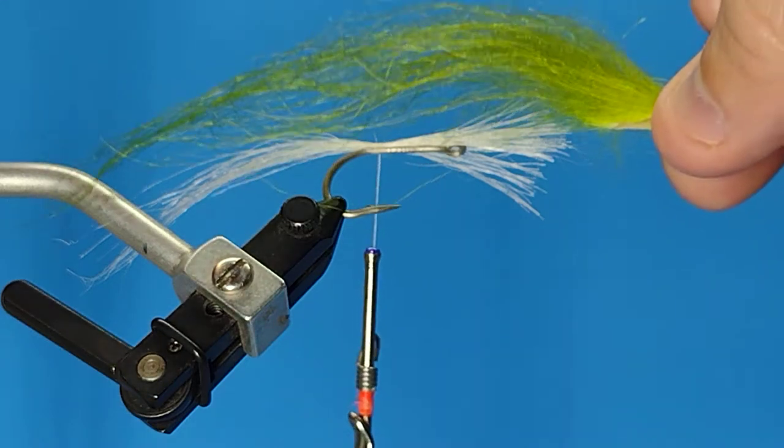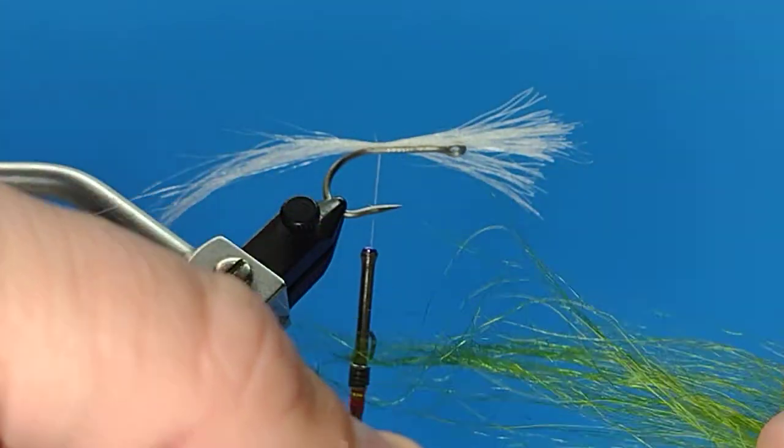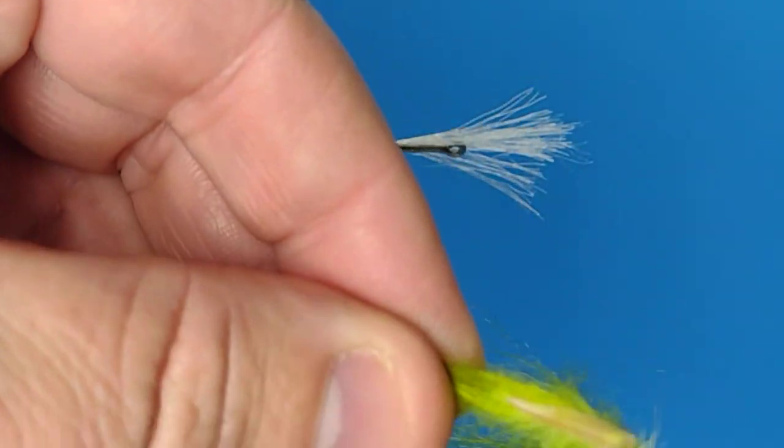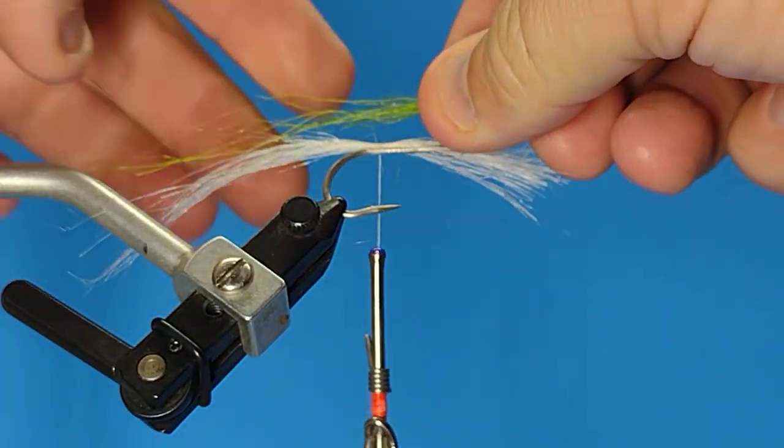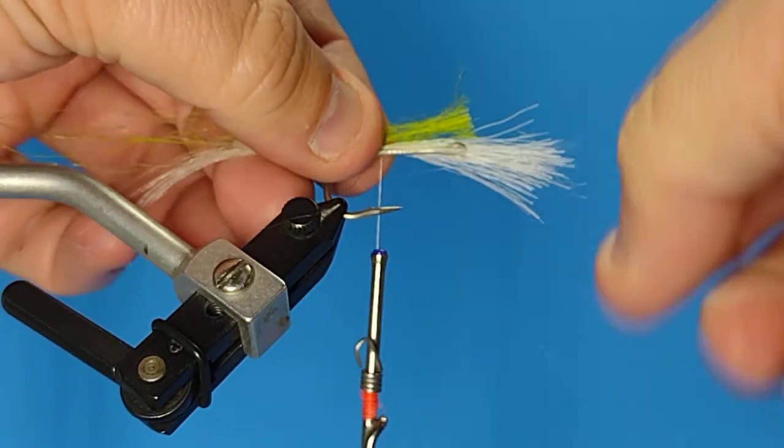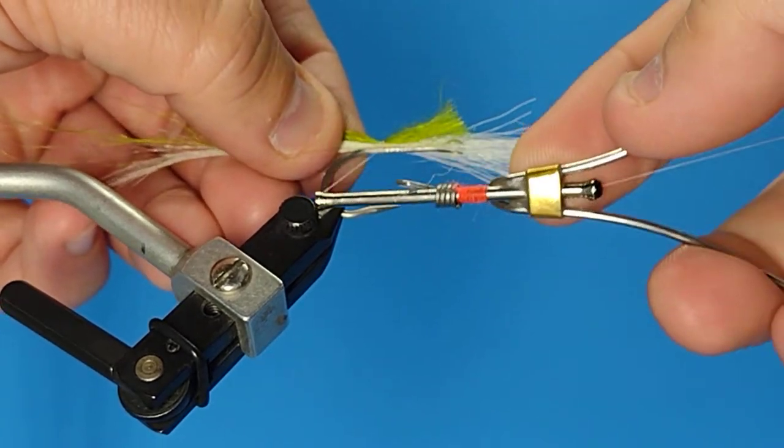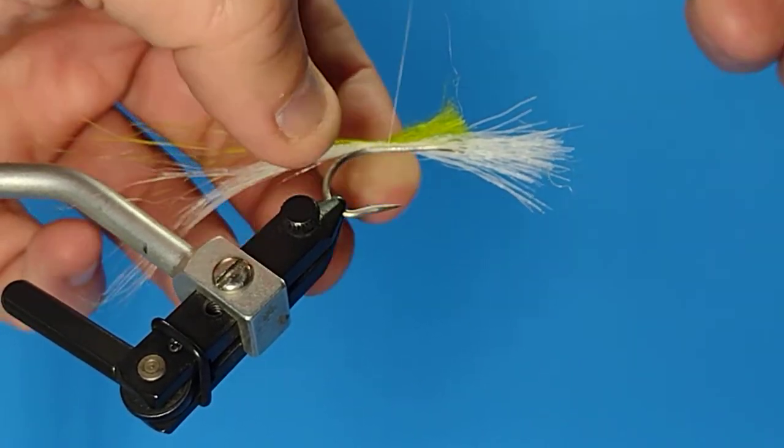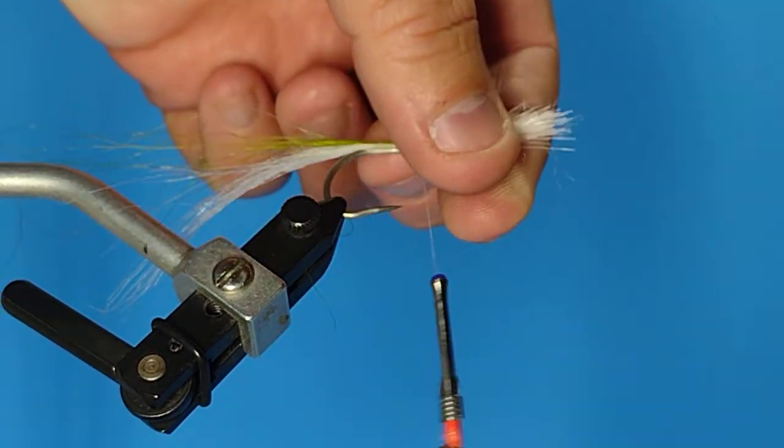I'm going to take a little bit of the green hair. Put that along the top. And wrap forward a little bit. Now I can trim off that extra.